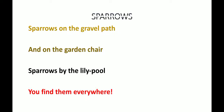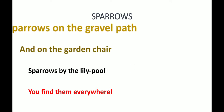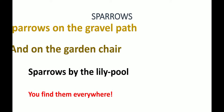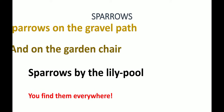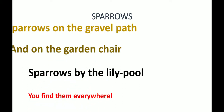Sparrows on the gravel path and on the garden chair, sparrows by the lily pool — you find them everywhere. Now the poet is telling that he can also see the sparrow on the gravel path and on the garden chair. The sparrows are also sitting by the lily pool. He can find sparrows everywhere.